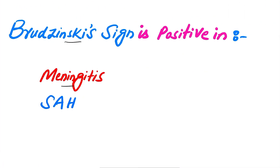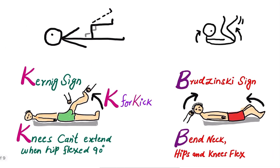Brzezinski sign is positive in meningitis and subarachnoid hemorrhage. There is a mnemonic to remember these two confusing signs: Brzezinski sign and Kernig sign. Brzezinski has the letter B, and bent neck also has the letter B — so B for Brzezinski, B for bent neck. Kernig sign has the letter K, and knees also has the letter K — so K for Kernig, K for knees, K for kick.